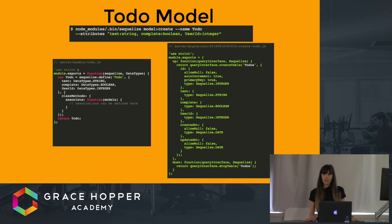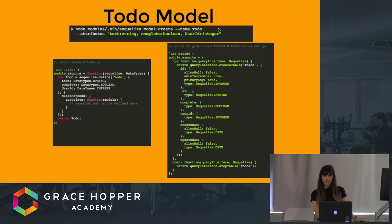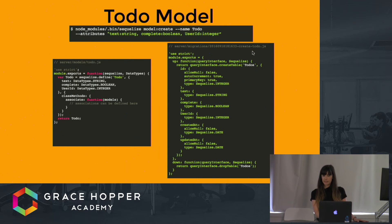If you had started at your company using migrations, you could have used this handy generator that the Sequelize CLI package gives you. Just by writing this line of code, it makes your whole model file for you, so you don't have to go through all of this code anymore. Additionally, it makes a migration file with a timestamp plus the name of the migration, and it already populates the up and down functions for you. The up function is queryInterface.createTable with all of the columns you want, and down is dropTable.